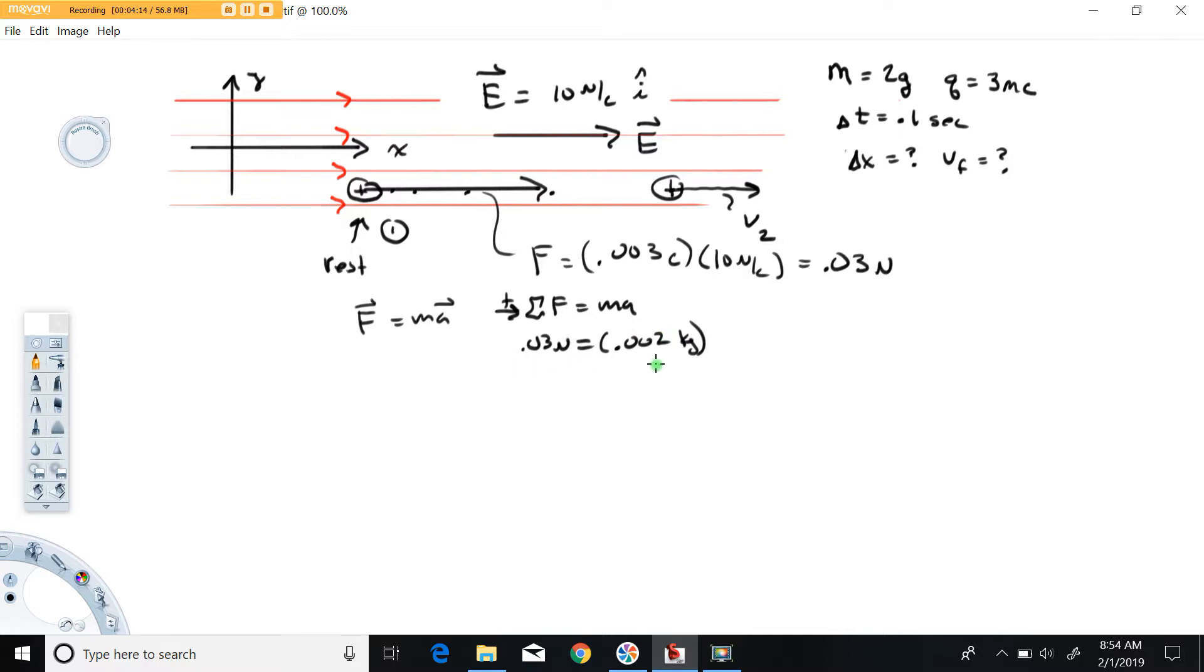If you want your acceleration in meters per second per second, this needs to be newtons and this guy in kilograms, times the acceleration. It's pretty easy to solve that for the acceleration. Take the 0.03 newtons, divide by the 0.002 kilograms,